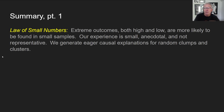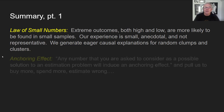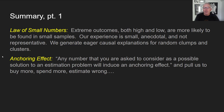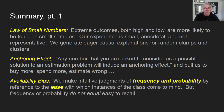To summarize: we've talked about the law of small numbers — extreme outcomes, both high and low, are more likely in small samples; our experience is small, anecdotal, and not representative, and we generate eager causal explanations for random clumps and clusters. We've talked about the anchoring effect — a number in your environment will pull your estimation and decisions toward it, making you spend more or estimate wrong numbers. And availability bias — we make intuitive judgments of frequency and probability by reference to ease of recall, but frequency or probability do not equal easy to recall. They need to be separated. Next, the second part of this lecture will cover the remaining Kahneman chapters 10 through 18.